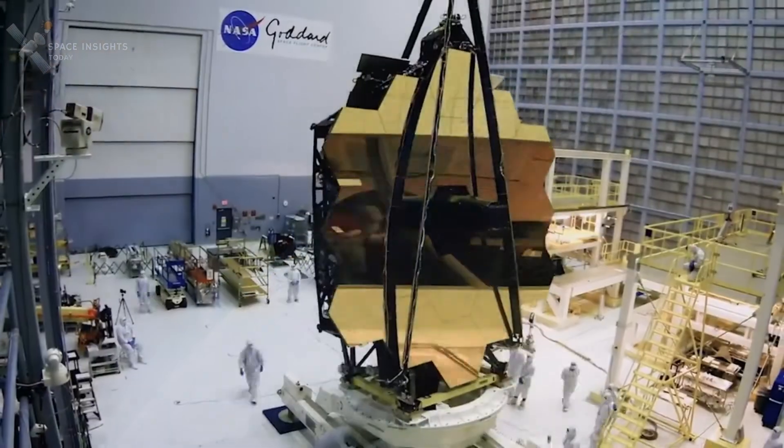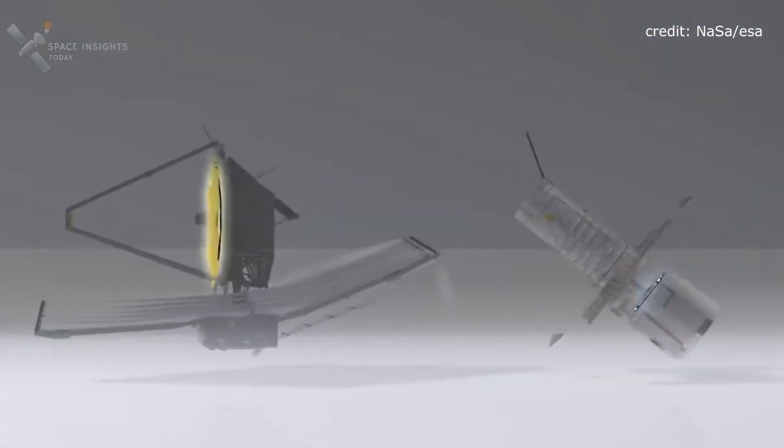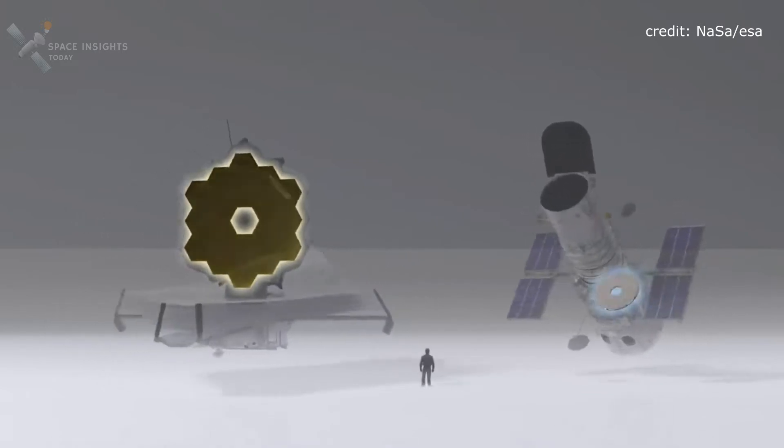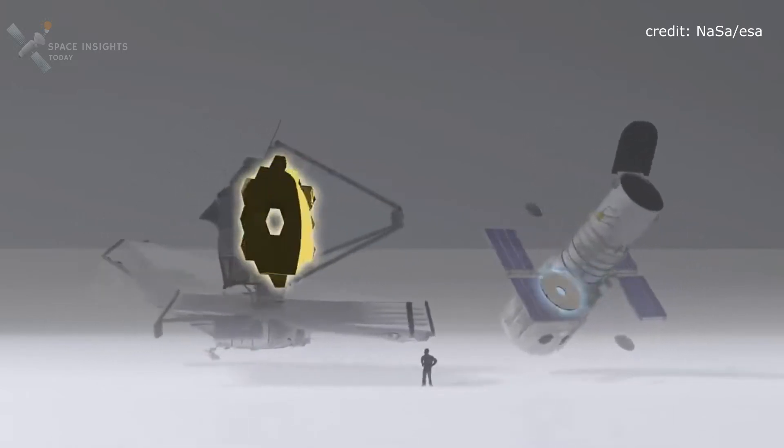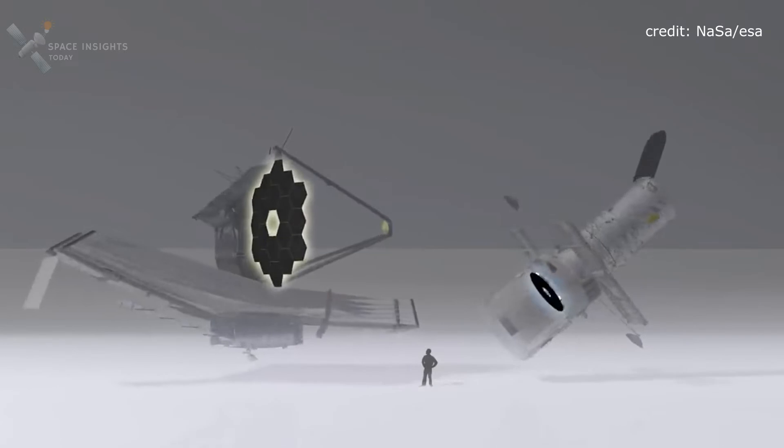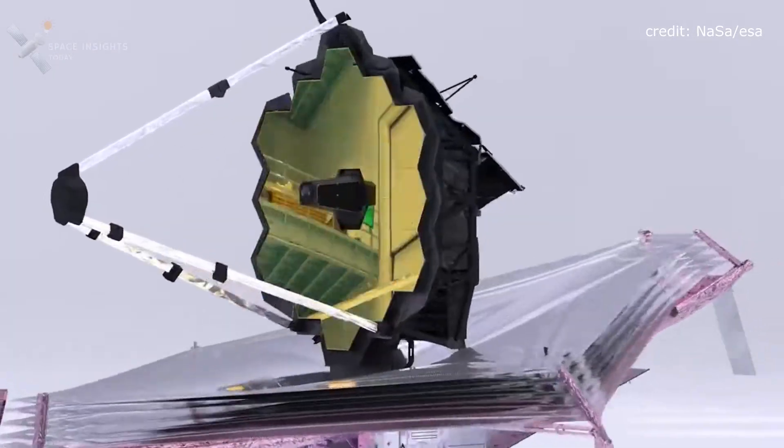The James Webb Space Telescope for example will not be in orbit around the Earth, like the Hubble Space Telescope is, rather it will be on L2 point, hoping to provide far greater views on our solar system.